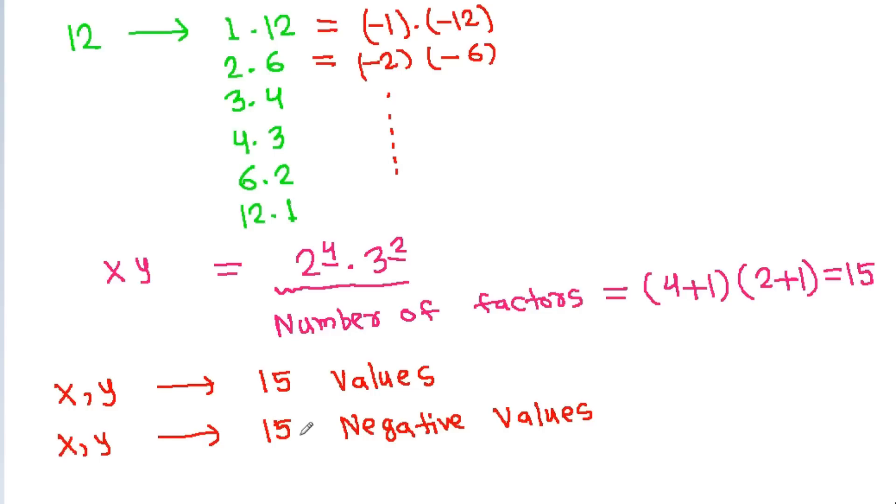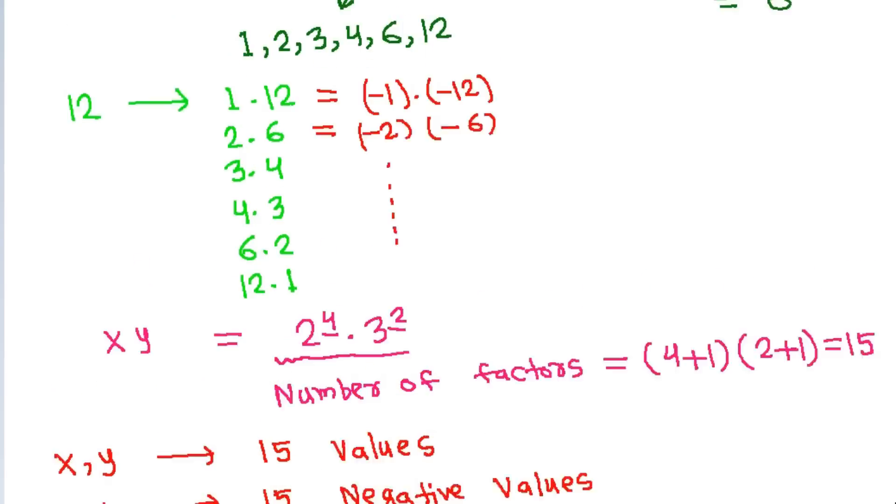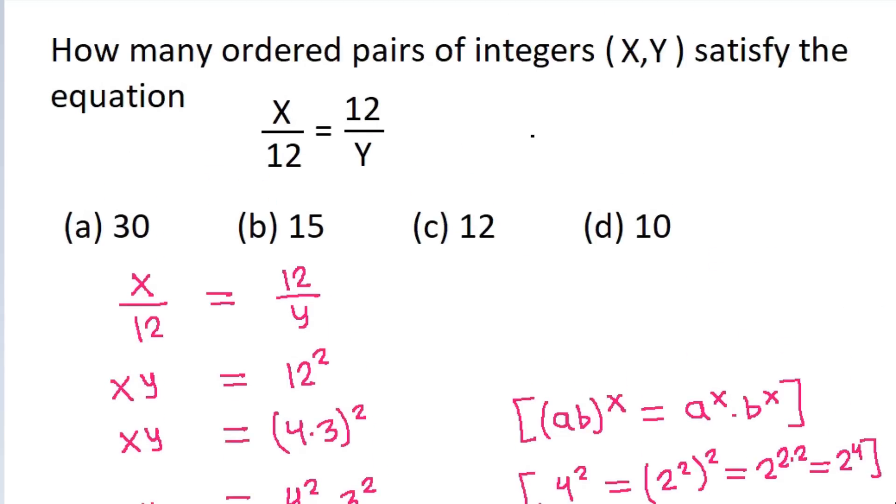So the total number of values is 15 plus 15, which equals 30. The correct answer is (a).